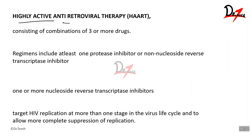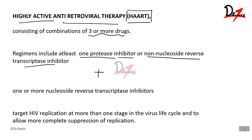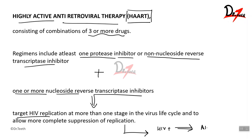A key therapy is HAART — highly active antiretroviral therapy — which has shown good results. It consists of a combination of three or more drugs: at least one protease inhibitor or non-nucleoside reverse transcriptase inhibitor, plus one or more nucleoside reverse transcriptase inhibitors. This targets HIV replication at more than one stage of the virus cell cycle, allowing complete suppression of replication, thereby preventing progression from HIV positive to full-blown AIDS.